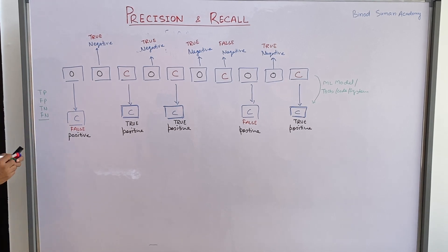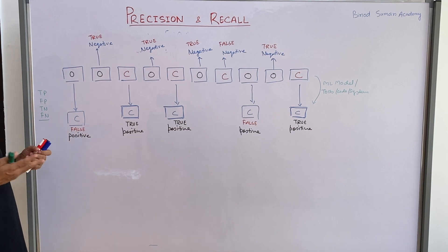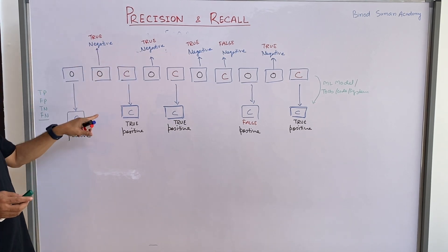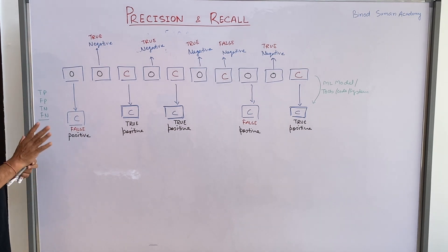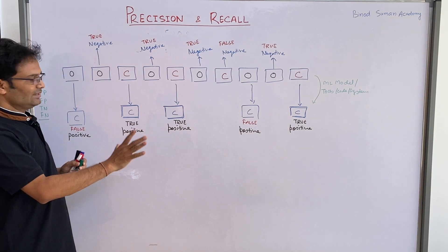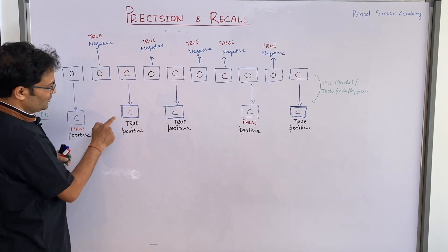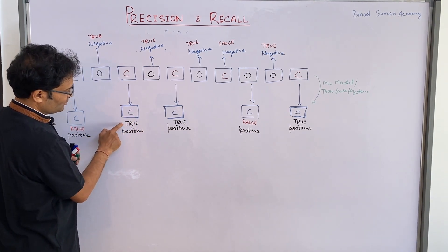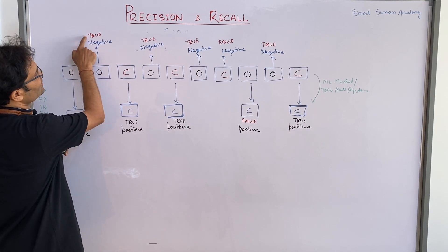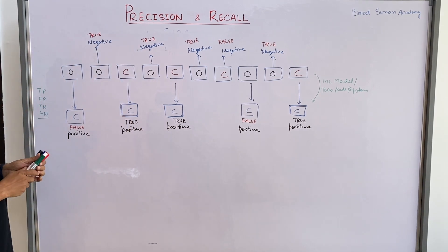If you get confused about where to put 'true' and where to put 'false,' here is an easy way to remember: whatever the model is saying correctly, that is called 'true.' If the model's prediction is correct, put 'true'; if it is incorrect, put 'false.' That's another simple way to remember it.